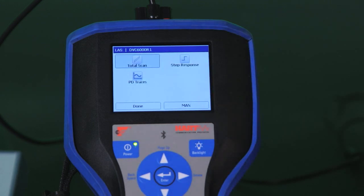As you can see you can do things like a total scan for a valve signature. You can do a step response. For example if I select that one you see the step studies you can run.